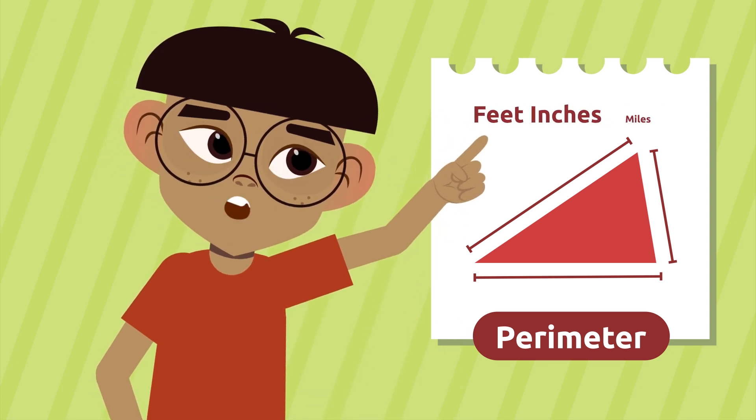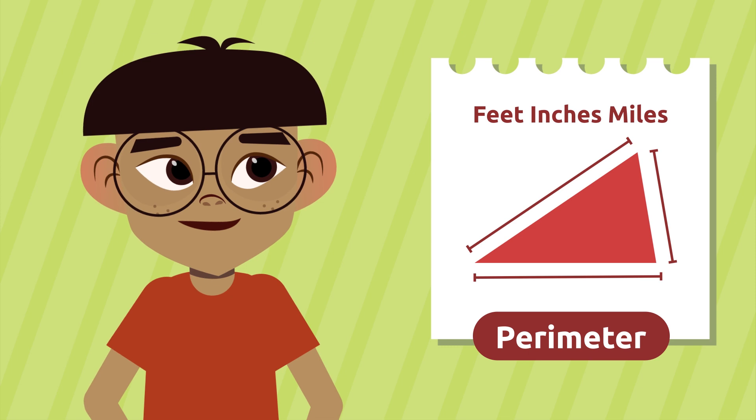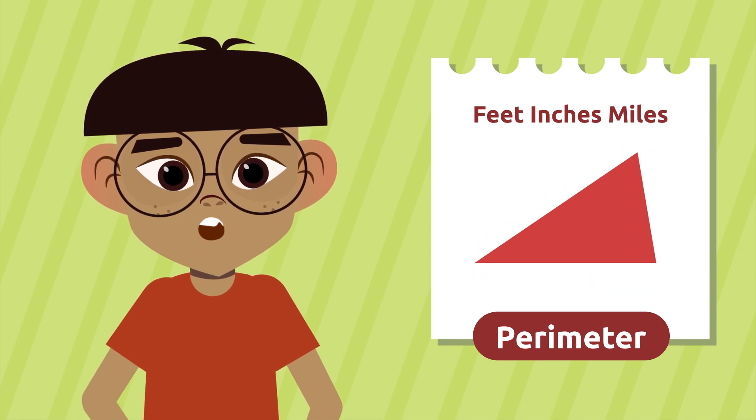That is to say, it's the measuring unit of its area. That's why it's measured in feet, inches, miles, or other measuring units. To find the perimeter of a figure, we should add the lengths of each one of its sides.